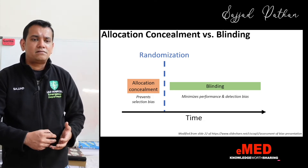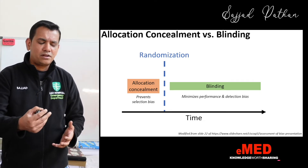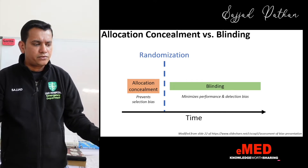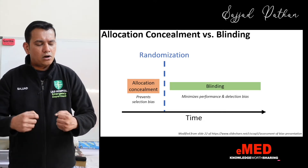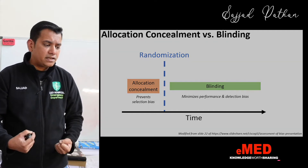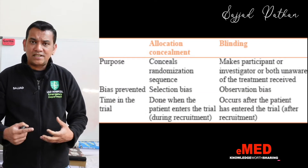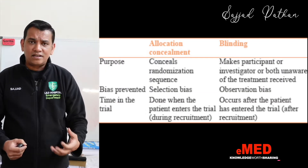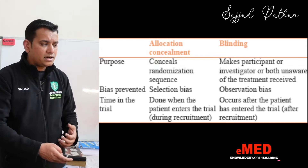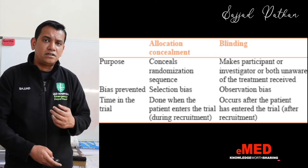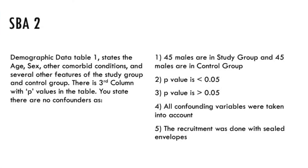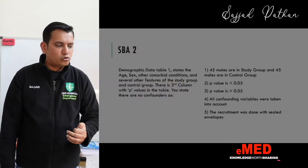Randomization happens after you have started the trial — after enrollment you randomize patients to the different groups or arms, and that process is known as blinding. Recruitment is simply allocation, and clustering is a term used for sampling. Let us now look at question number two.